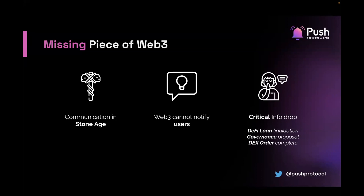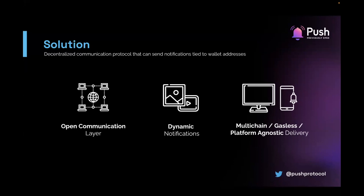That's where Push Protocol comes in — a protocol that allows sending notifications to wallet addresses. The applications can be pretty much anything: a risk of liquidation alert, a notification whenever there is a new governance proposal, whenever someone sends you a message, or whenever someone uploads a video or wants to video call you. The solution Push Protocol is building is an open communication layer, so anyone can tap into the network and fetch notifications themselves. The notifications are completely dynamic — there's no restriction on what content can be sent. They can be plain text, encrypted, a video, or a live stream notification. There's no restriction whatsoever.